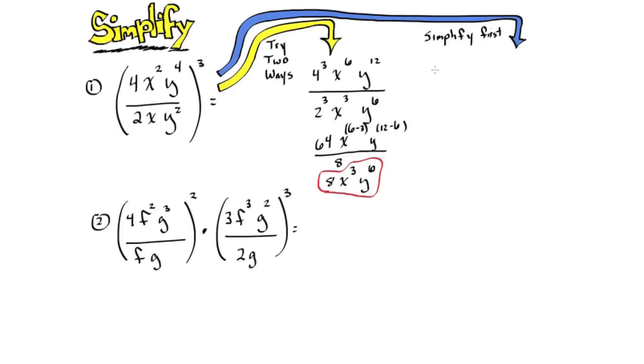In the second way, let's simplify first and then we'll take care of the power on the outside. So if we simplify the coefficients and we subtract the exponents using the quotient property and then distribute the 3 as the exponent, we get the same answer and with fewer steps.